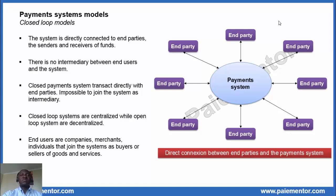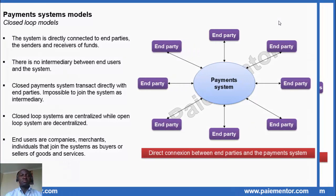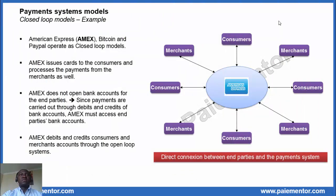Now let's consider an example. Examples of closed loop systems are American Express, PayPal, and Bitcoin. Let's focus on the American Express payment system. The merchants and consumers join the system and transact directly with Amex. There is no intermediary in between. Amex issues cards to the consumers and processes the payments from the merchants as well.